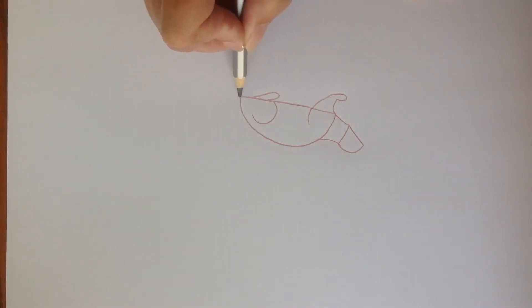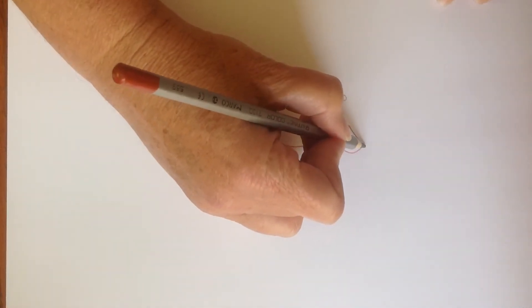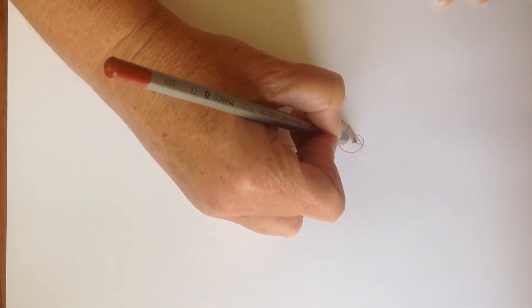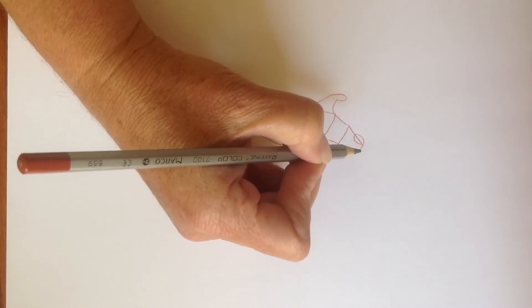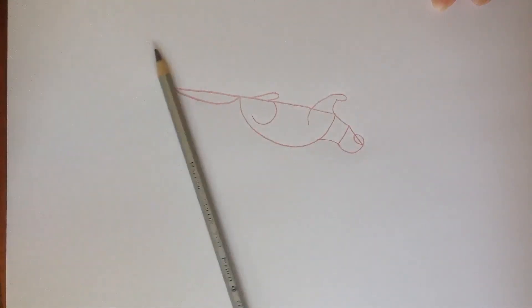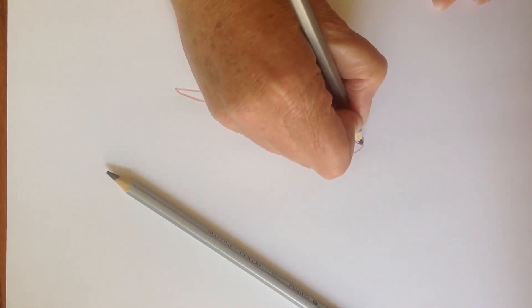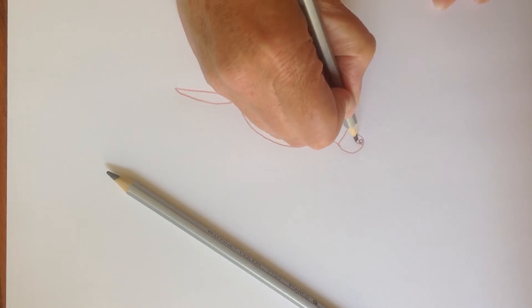Marmots also have a tail. Like that. Marmots also have a snout, so you kind of draw like a little almond shape here. And then you can give your marmot a nose and a little smiley mouth, because marmots are very happy.